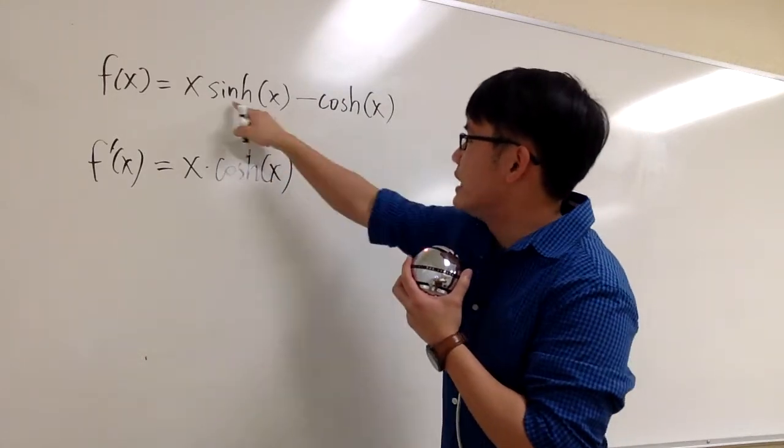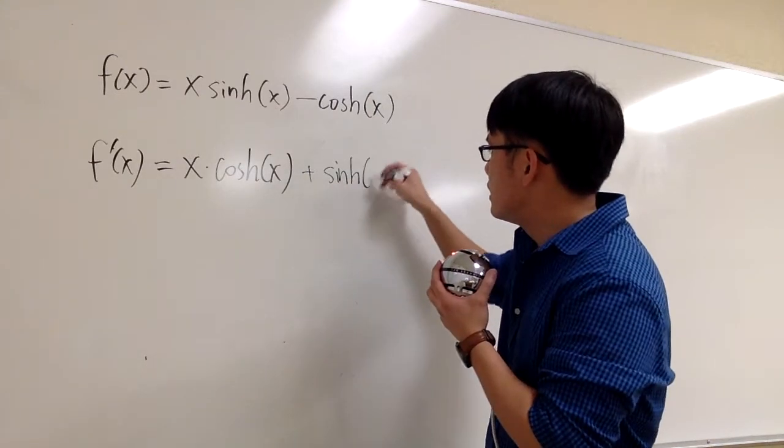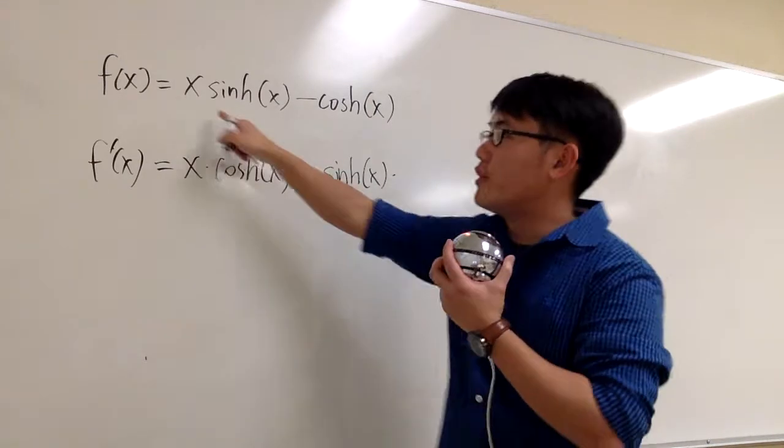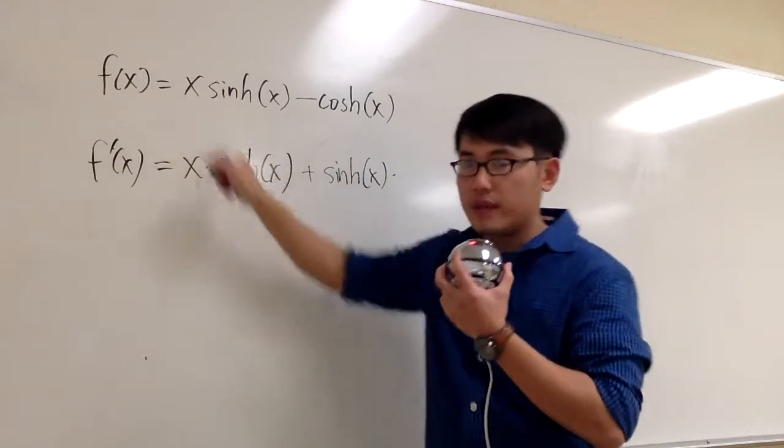And then we will add the second function, which is sinh x, times the derivative of the first. The derivative of x is 1, so multiply by 1.